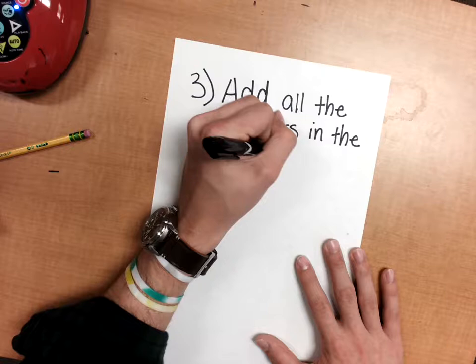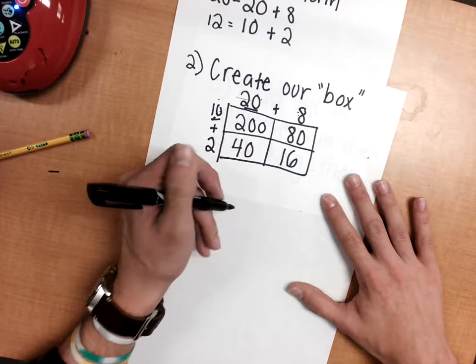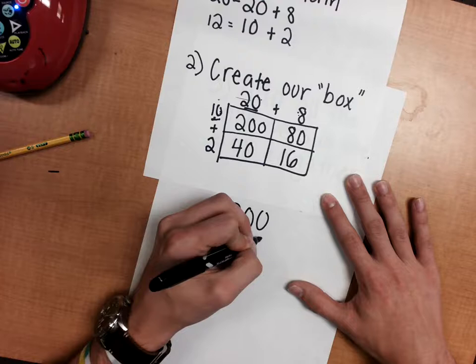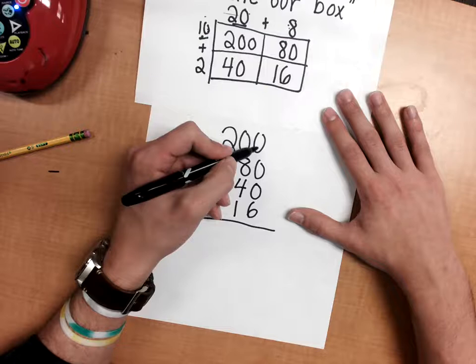Going back to my box, I have 200, so I'm going to add 200 plus 80 plus 40 plus 16. When we add, we're adding by place values. We look at the ones place first: 0 plus 0 plus 0 plus 6 is 6.